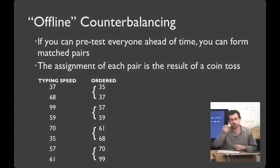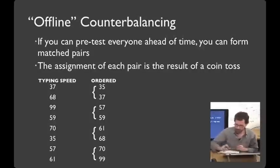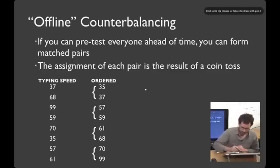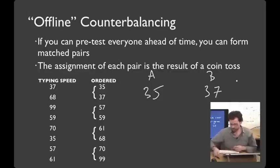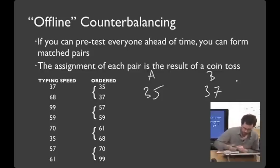I got one of these dollar coins in a ticket machine the other day. It'll do well for flipping. So, for 35 and 37, that's heads. So, we'll put 35 down here in our first condition. 37 goes in the second. Then, for 57 versus 59, that's tails.